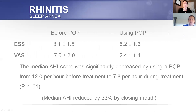They slept using the paper tape. The UPWARD sleep scale before the tape was 8.1 and after was 5.2 — a significant reduction. The visual analog scale came down from 7.5 to 2.4. The median AHI index score was significantly decreased from 12 to 7.8, a reduction of 33%.